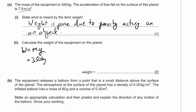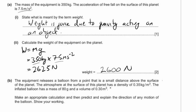Calculate the weight of the equipment: weight = mass × gravity = 350 × 7.5 = 2625 newtons. However, we have two significant figures in each given value, so the answer should be rounded to two significant figures: 2600 newtons.